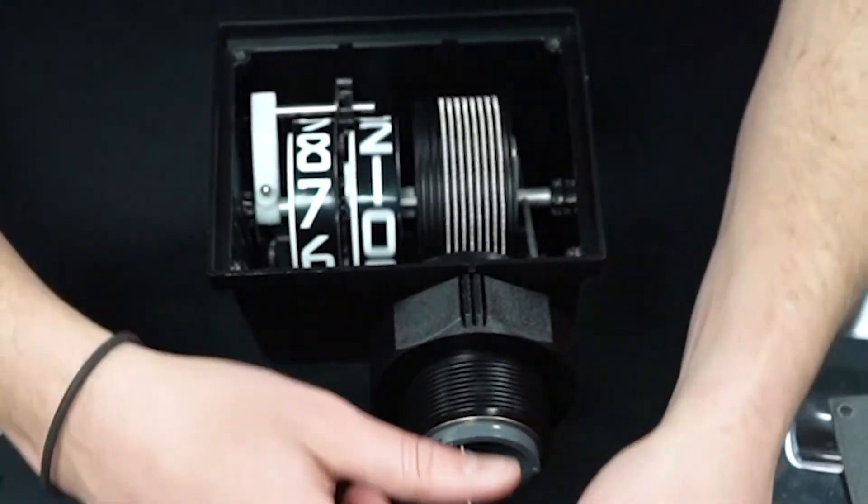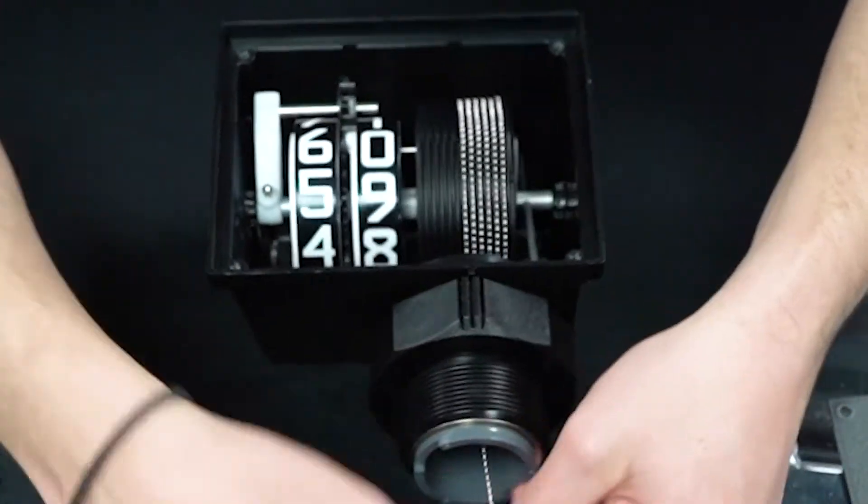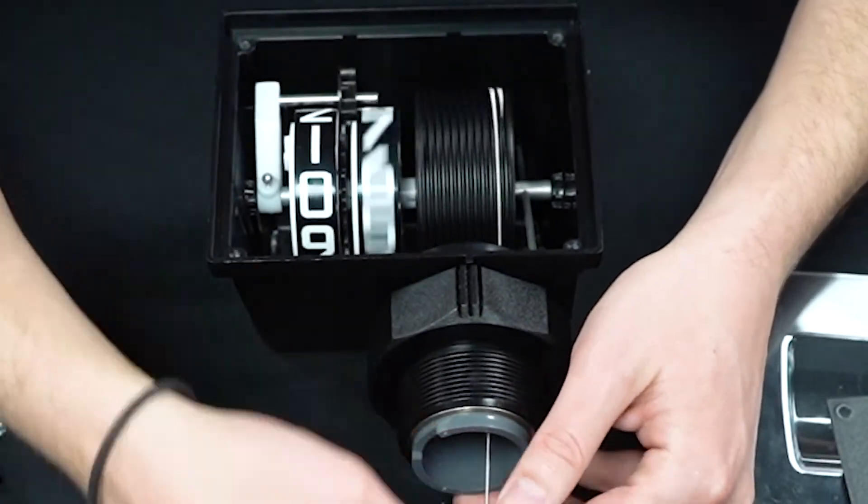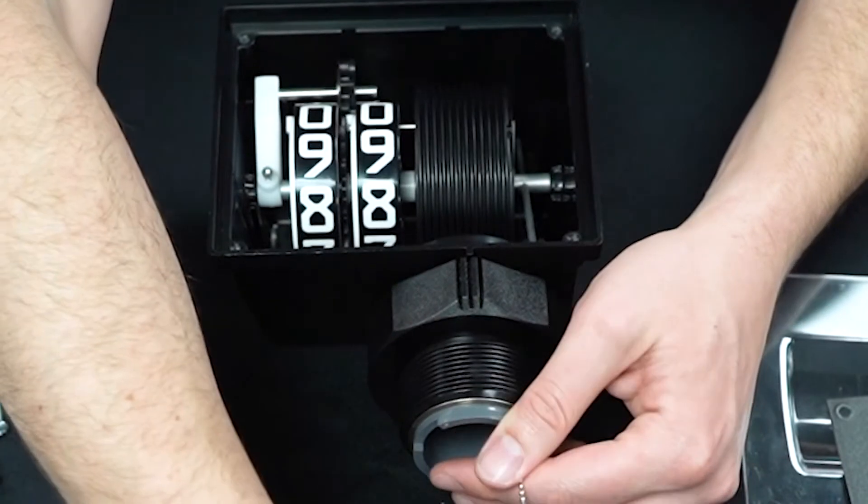Drop the end of the chain out of the bottom of the gauge and test the function by pulling the chain all the way out. When the chain is all the way extended, the numbers should read 0-0.